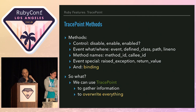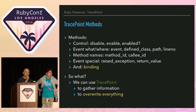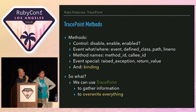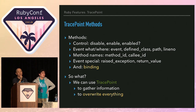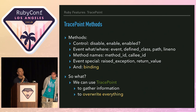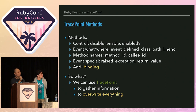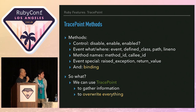TracePoint has many methods to control its behavior or to know the details of events — what the event is, or where the event occurs. We have methods like method_id, callee_id, raised_exception, or return_value. TracePoint also has a binding method, which means we can get a binding object at any point we can hook using TracePoint. So that means we can use TracePoint to gather information about the Ruby virtual machine, or we can overwrite every local variable at any time in Ruby code.